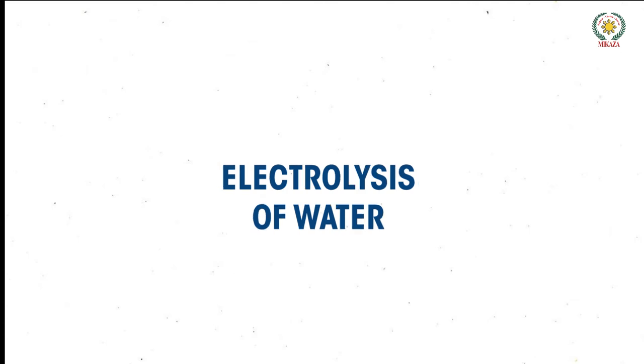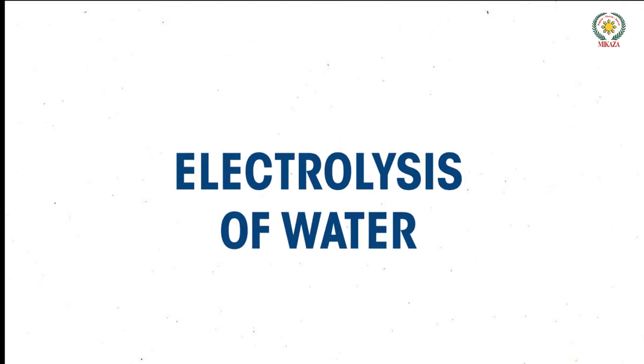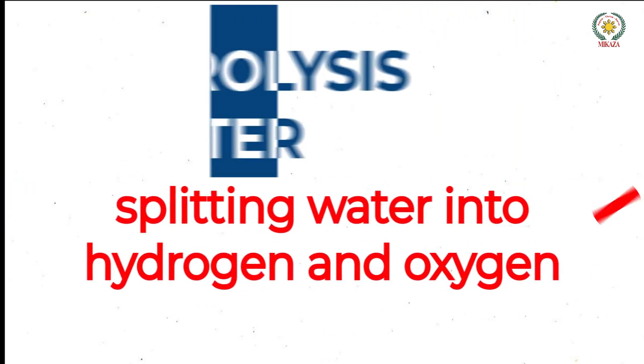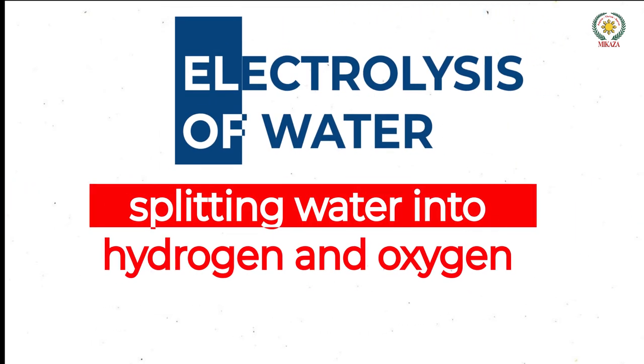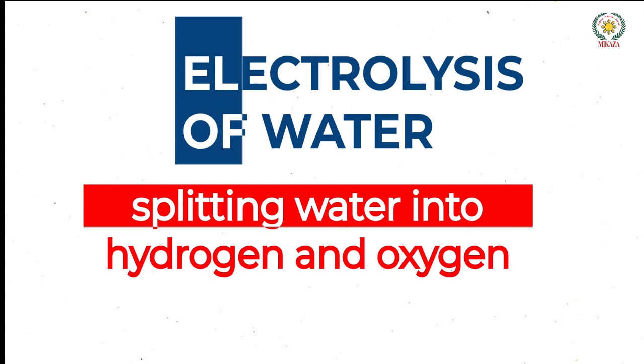We are going to talk about electrolysis of water in which we are going to split water using electricity. Water is nothing but H2O which is made up of molecules containing two hydrogen atoms and one oxygen atom. So when we pass electricity through water, hydrogen and oxygen can be separated.